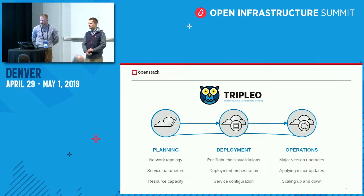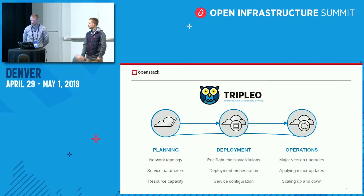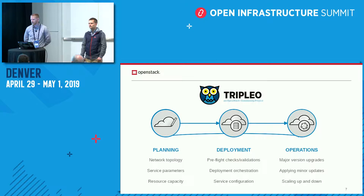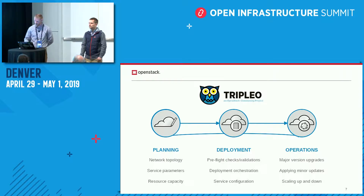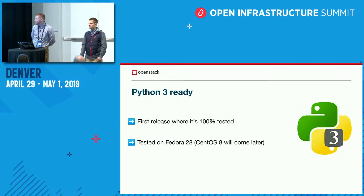We focus on giving you a flexible way to do your deployment, particularly in the planning stage to customize services and roles for your overcloud. The deployment itself has several stages with pre-flight checks and validations. We also focus on day-two operations like major upgrades, updates, and scaling. In the Queens release we added fast-forward upgrades from Newton straight to Queens, and in Train you'll be able to go from Queens to Train.